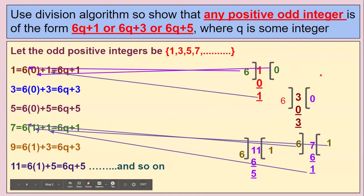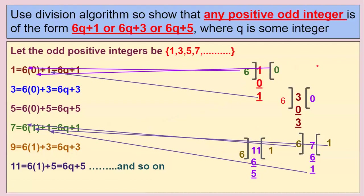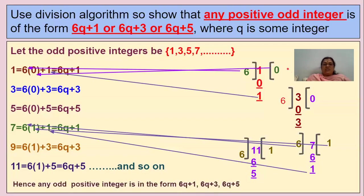Using the Division Lemma, you can write any positive odd integer in the form of 6q + 1, 6q + 3, and 6q + 5. This is a four-mark problem. Hence, any positive odd integer is in the form of 6q + 1, 6q + 3, and 6q + 5.